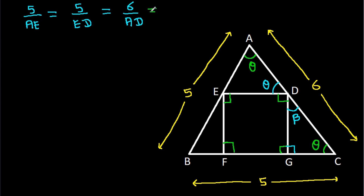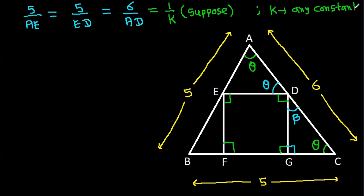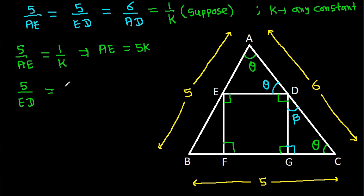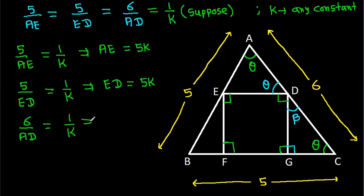Now, suppose this ratio is equal to 1 over K, where K is any constant. Then we have 5 over AE equals 1 over K, that means AE equals 5K. And 5 over ED equals 1 over K, that means ED equals 5K. And 6 over AD equals 1 over K, that means AD equals 6K. So AE is 5K, ED is 5K, and AD is 6K.